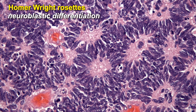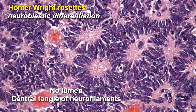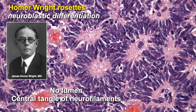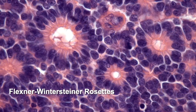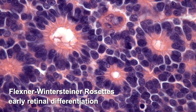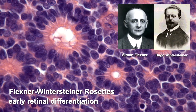Homer Wright rosettes represent neuroblastic differentiation. They lack a lumen and have a central tangle of neurofilaments. They were named after James Homer Wright. Flexner-Wintersteiner rosettes represent early retinal differentiation. They have a central lumen that corresponds to the subretinal space, and they were named after Simon Flexner and Hugo Wintersteiner.